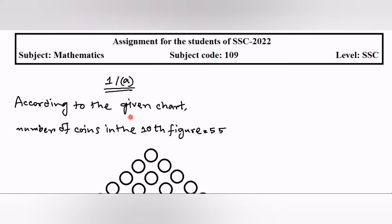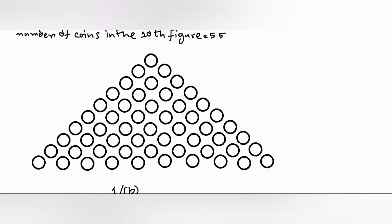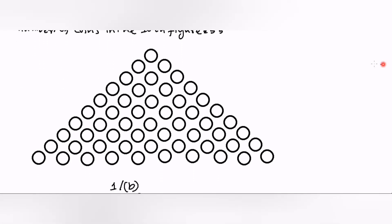You already have the question. The first question was determining the 10th figure's number of coins. The answer is the 10th figure's coin number is 55. They have asked us to draw the figure, so according to the question, you have to do it like this. Total number is 55 — you can calculate and follow this way.